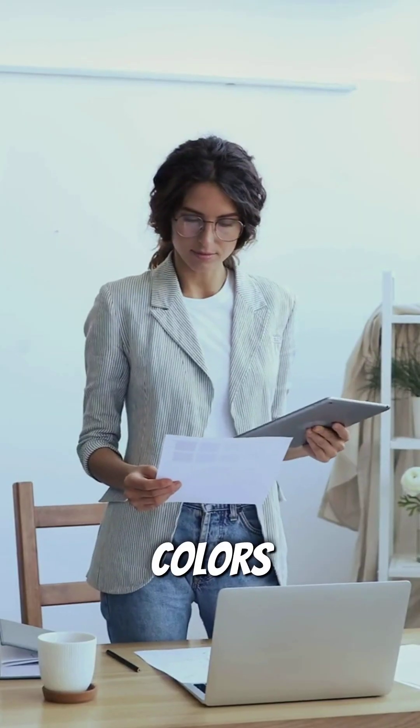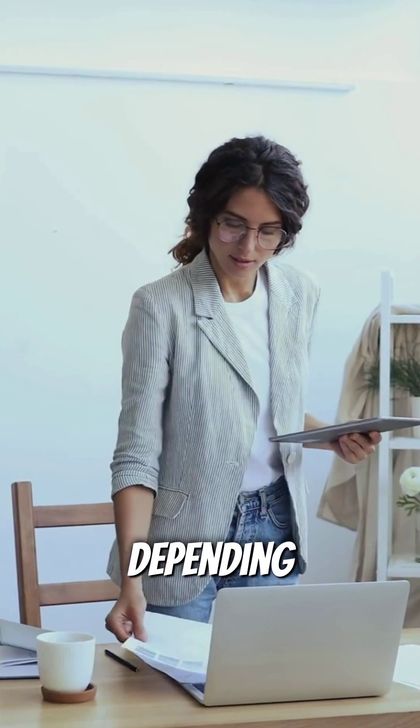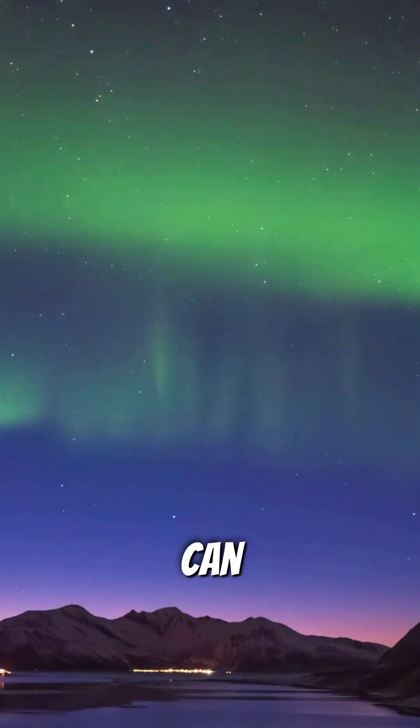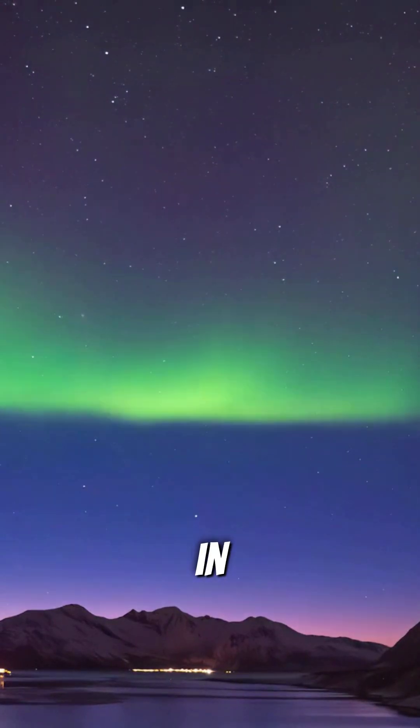Two identical colors can appear completely different depending on their surroundings. And sometimes your brain can even see colors that don't exist in reality.